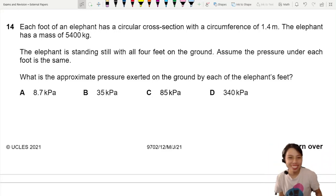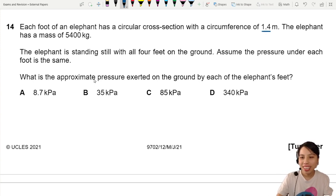Each foot of an elephant has a circular cross section with a circumference that is huge. Okay, this elephant has a mass of 5400 kg.